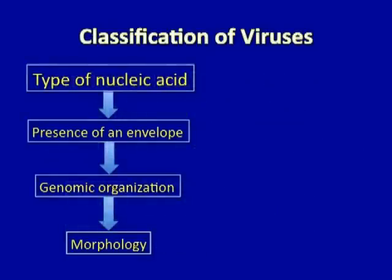Viruses are classified according to their composition and structure. Initially, they are broken up into two categories based on the type of nucleic acid they have, whether it's DNA or RNA. No virus really has a genome made up of both DNA and RNA in the same virion. Once divided by this category, they can be separated based on whether they have an envelope, then by certain features of the organization of their genome, and finally by certain elements of morphology.